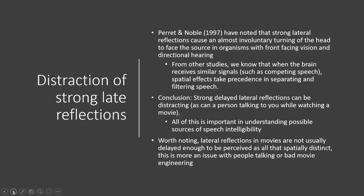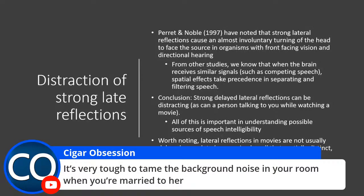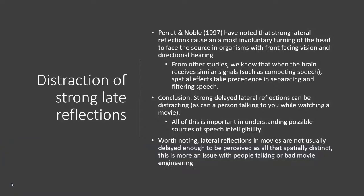If you've got somebody sitting next to you and they're talking, you're going to look at them — and that tends to be distracting from the speech. Other studies have shown that when we receive similar signals, spatial effects take precedence in separating out the filtering of speech. You get these separate streams in the brain for each, where it tries to attend to both, but it goes to the strongest one, which may not be the movie. Strong and delayed lateral reflections can be distracting — we probably want to avoid those. Also, lateral reflections in movies are often not delayed enough to be perceived as spatially distinct, because most home theaters are too small. There's research showing reflections as small as 3 ms can be separated spatially even if integrated from a timbre standpoint.